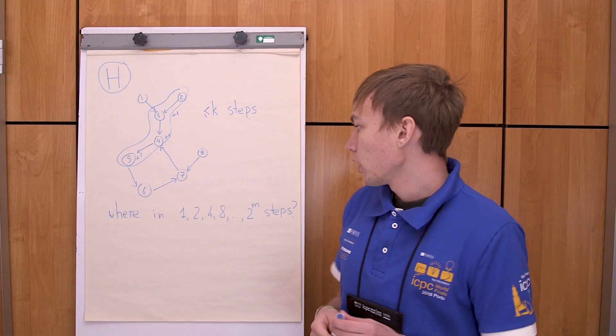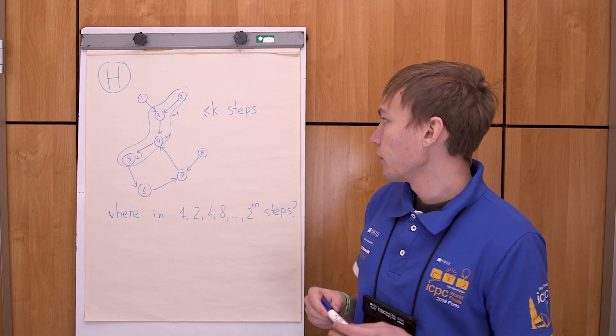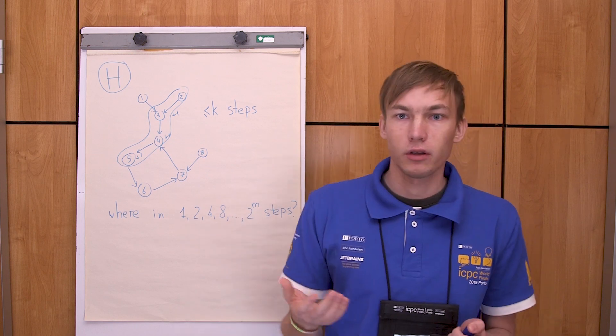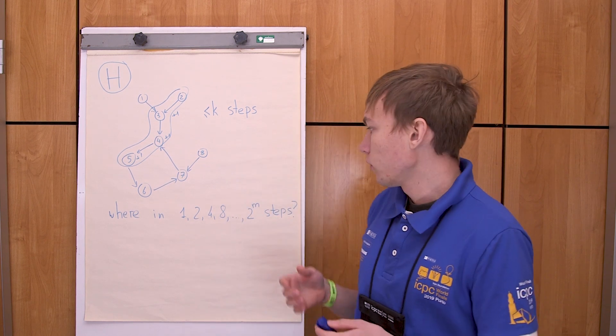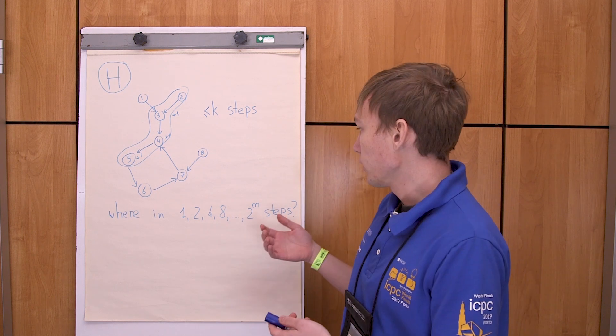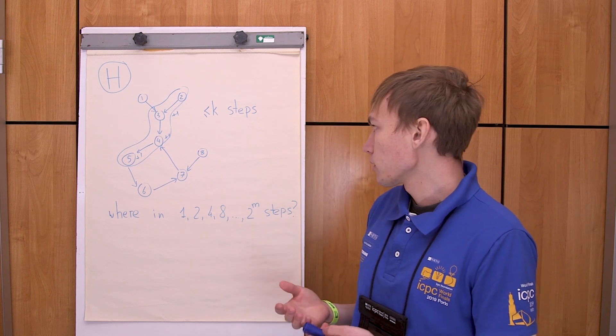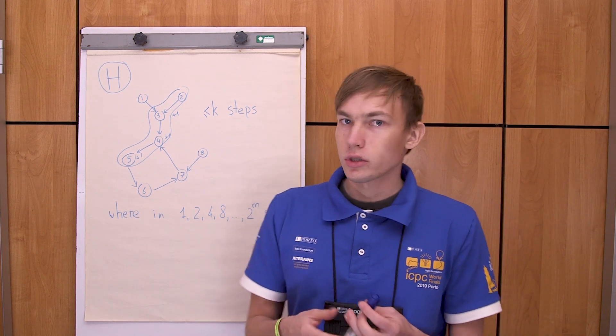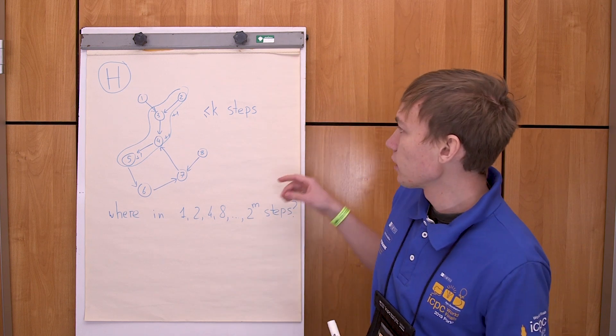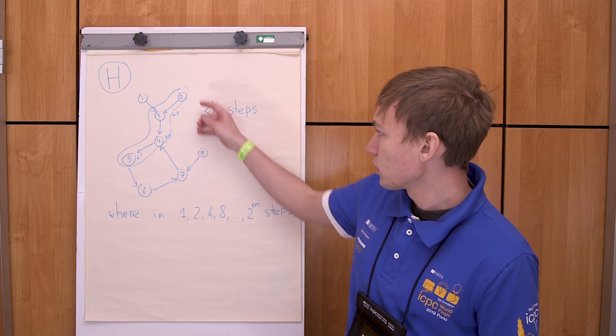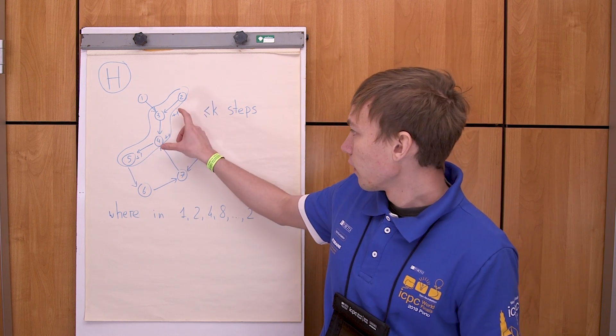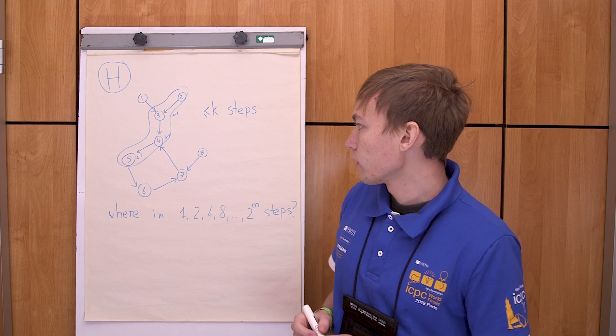So what can we do? We do a binary lifting technique. That means that for each vertex you can calculate in what vertex you will be if you do one, two, four, eight, or two to the power of m steps. After that you want to add plus one to all of the vertices which are in the length of the first k of this path.